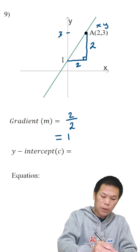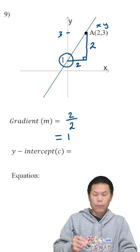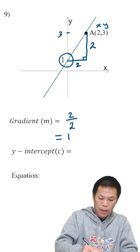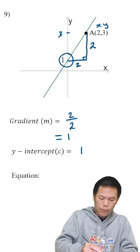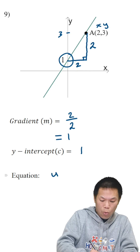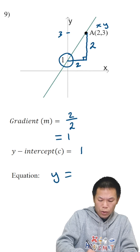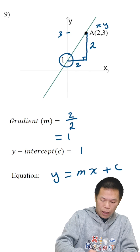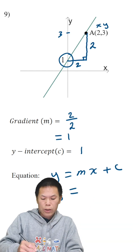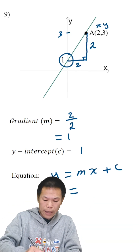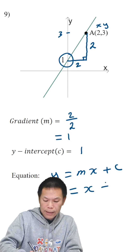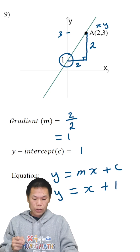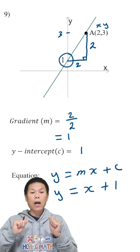And the y-intercept is 1 — it cuts the y-axis at 1, that's why we call the y-intercept equal to 1. Now, the equation of this line is y equals mx plus c. So therefore, y equals — m is 1, and 1 times x is x, plus c, and c is 1. So therefore, y equals x plus 1. There you go.